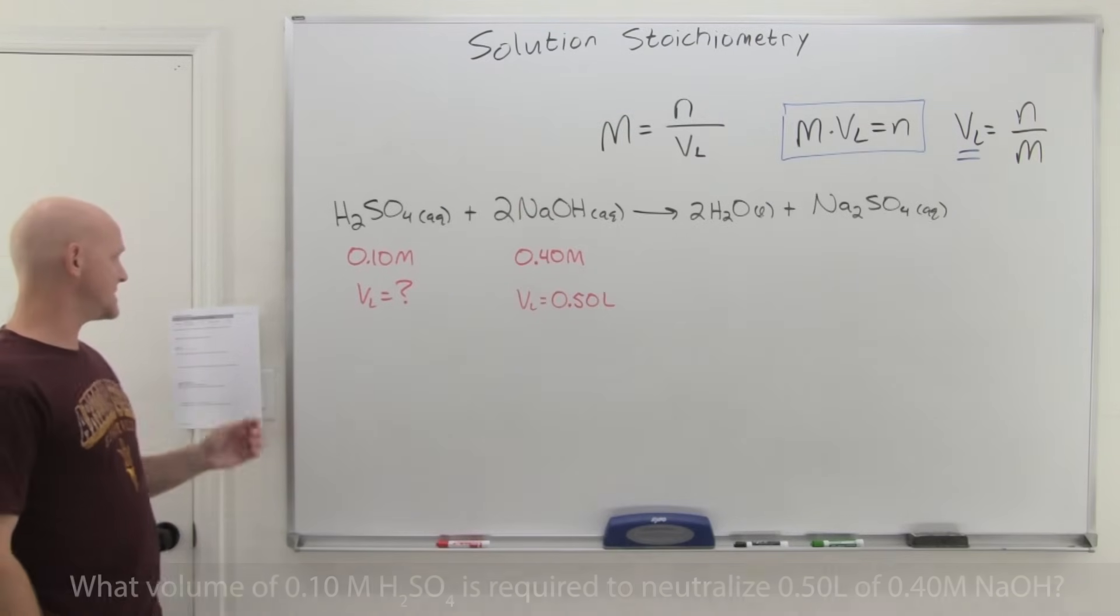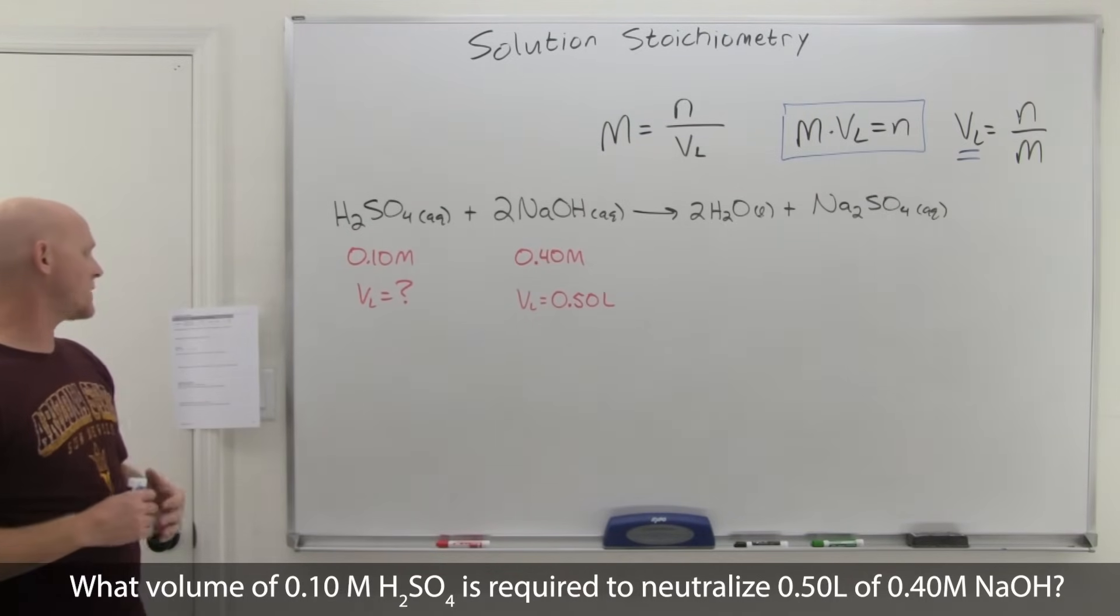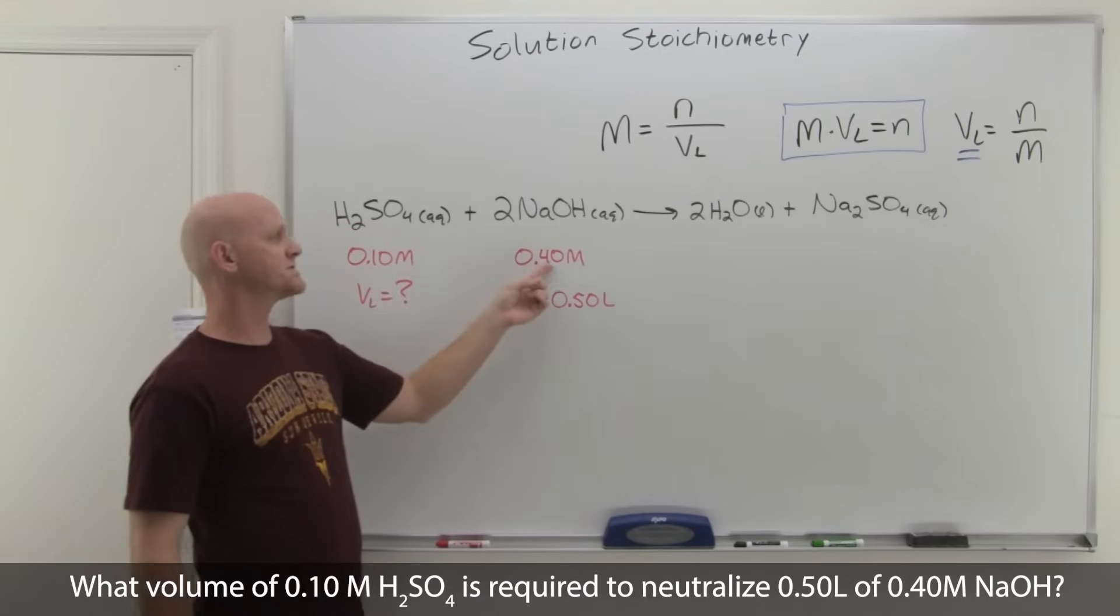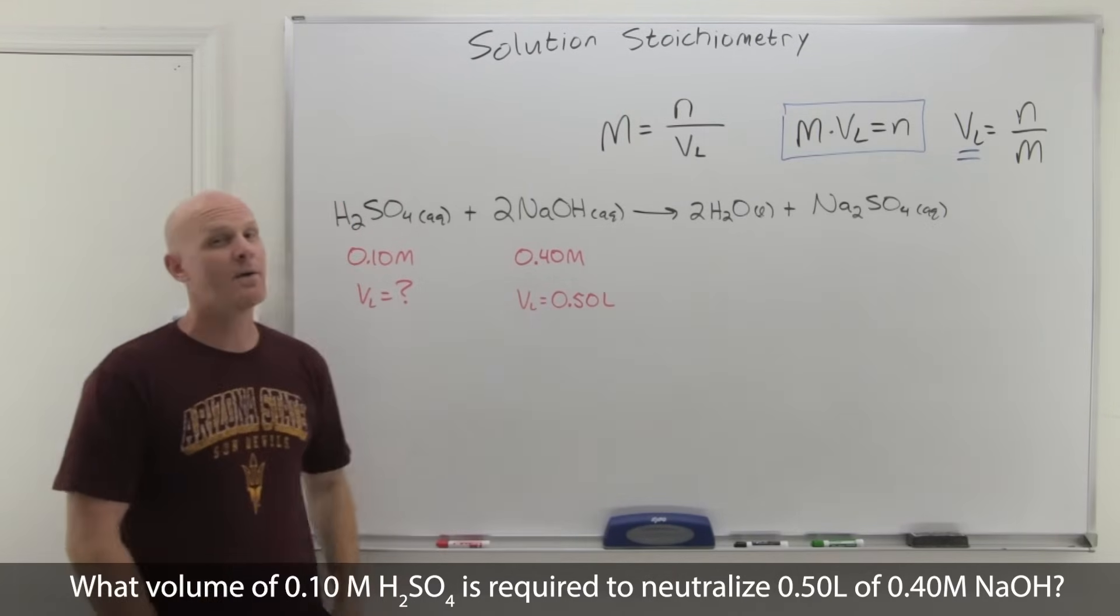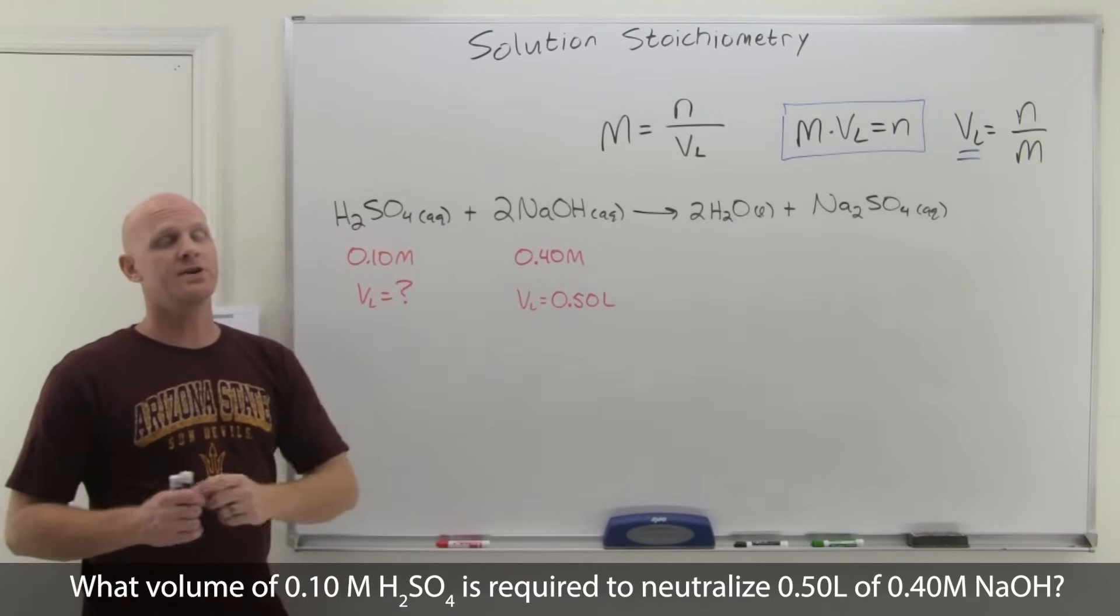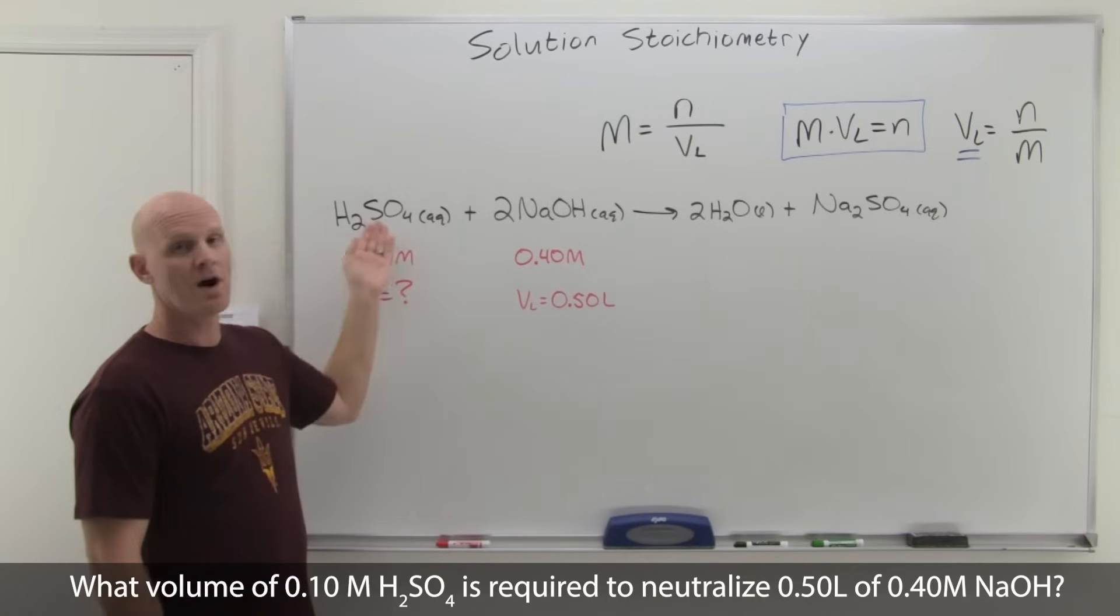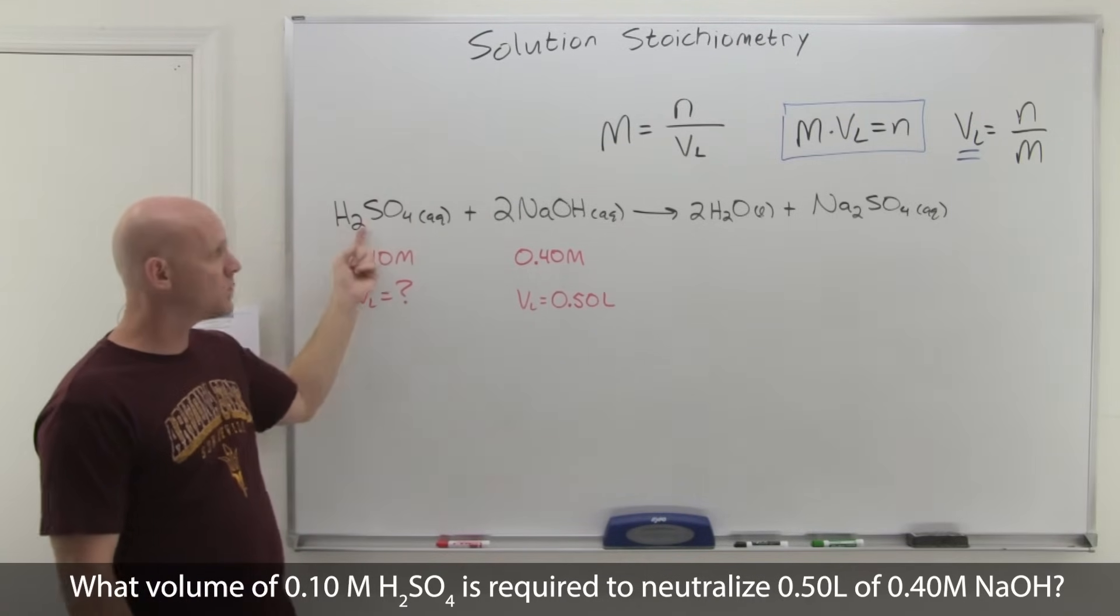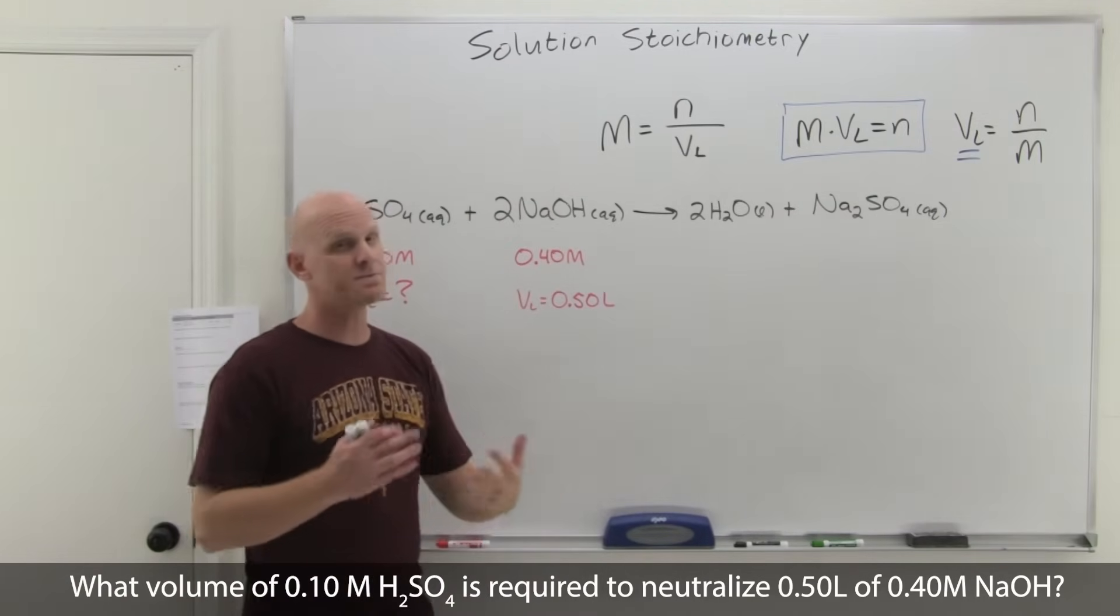This next question says: what volume of 0.1 molar H2SO4 is required to neutralize 0.50 liters of 0.4 molar NaOH? The reaction was provided, however, the reaction didn't have to be provided because this is one of the types of reactions we learned earlier in this chapter: acid-base neutralizations. We could have figured out, just knowing that H2SO4 and NaOH are reacting, that it's a 1 to 2 ratio and this was the balanced reaction.